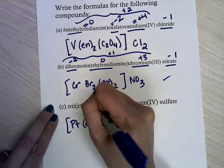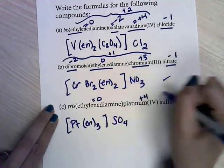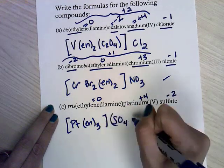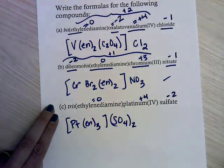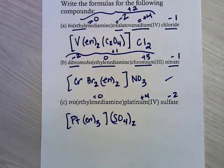Ethylenediamine still neutral, plus 4 for the platinum, minus 2 for the sulfate, so I'll need 2 sulfates to cancel that out.